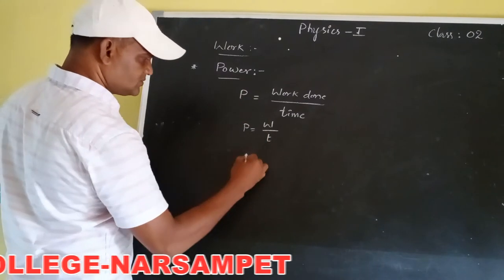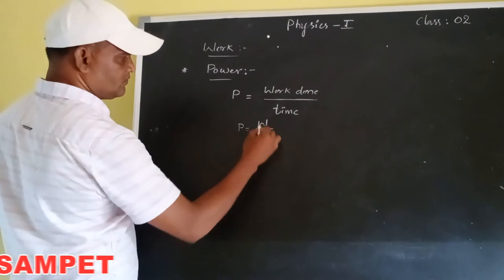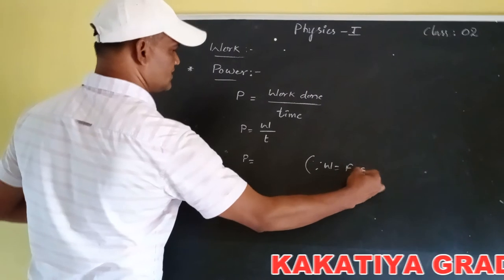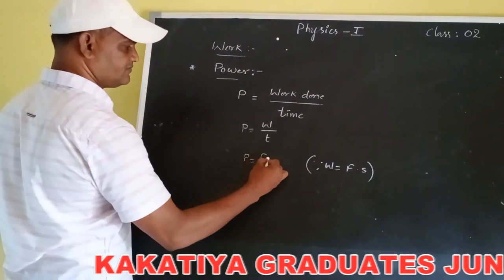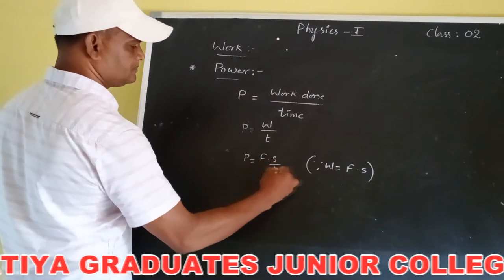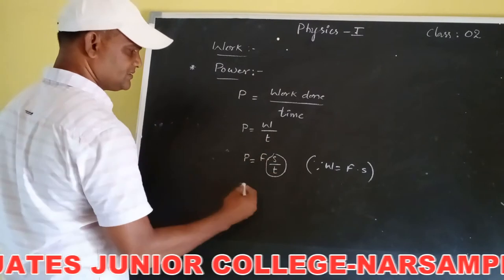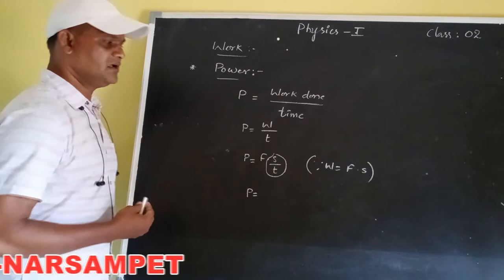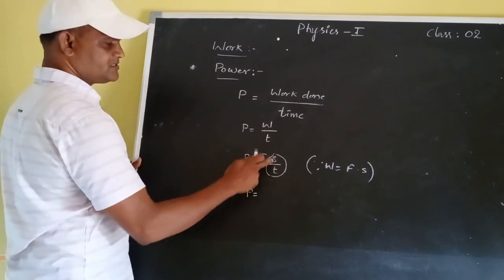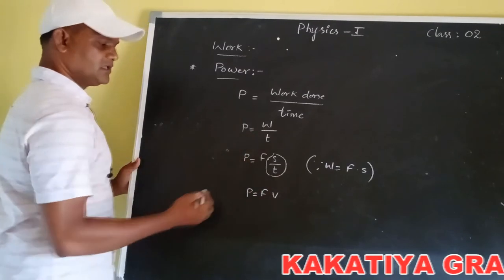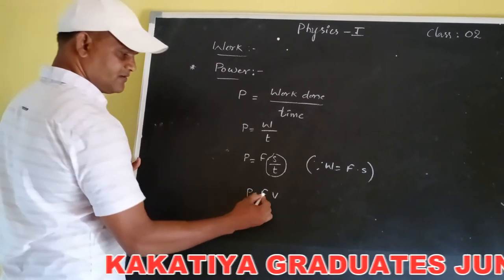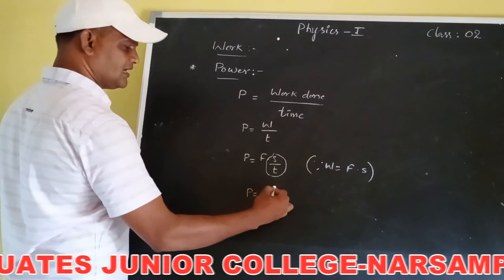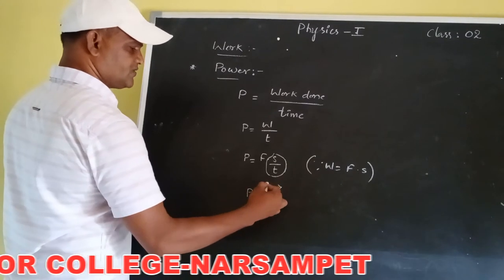We can also write power in another form. Work is nothing but the product of force and displacement, so P equals F into s by t. Here, s is displacement and t is time, so s by t is nothing but velocity. Therefore, the product of force and velocity is also known as power.